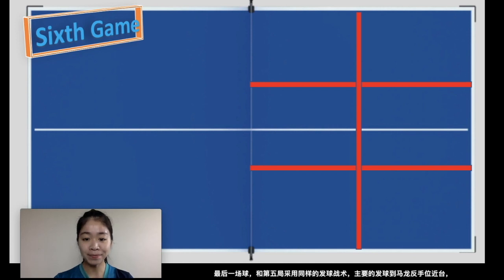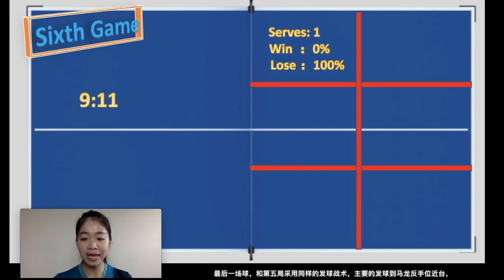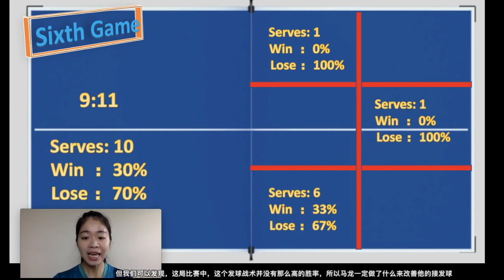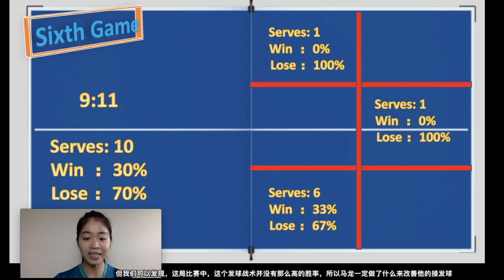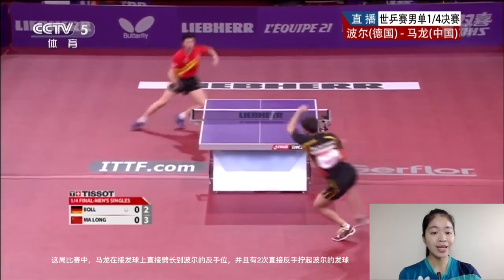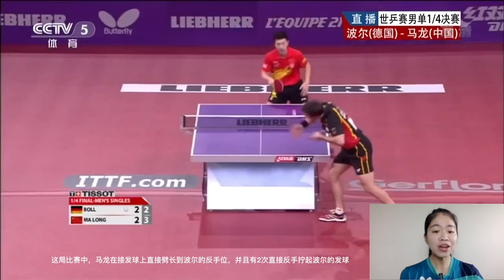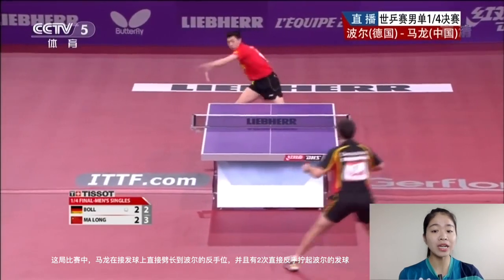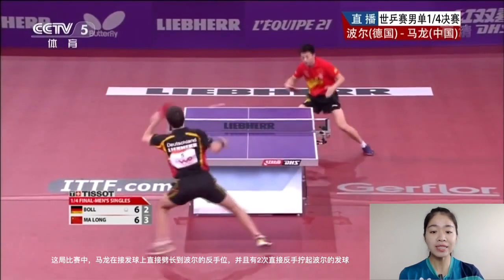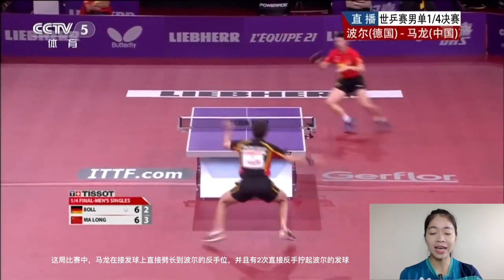In the last game Timo used the same serve strategy as the fifth game, with the majority of serves going to Ma Long's backhand shot area. However, Timo didn't score very high on serve, meaning Ma Long must have changed something to improve his return. Looking at the footage, in the last game Ma Long pushed long to Timo's backhand instead of short, and twice flicked Timo's reverse spin serve to initiate the attack.